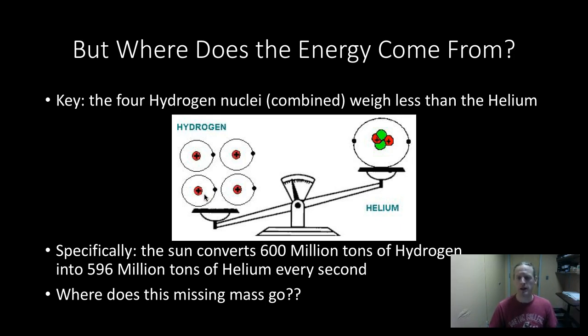In the case of inside the sun, what happens is every second, 600 million tons of hydrogen undergo fusion, and what we get is 596 million tons of helium. So quite literally, the sun is losing 4 million tons of its mass per second. I mean, that's kind of scary. If every second, you're losing a few ounces of your mass, you're only going to live so long.